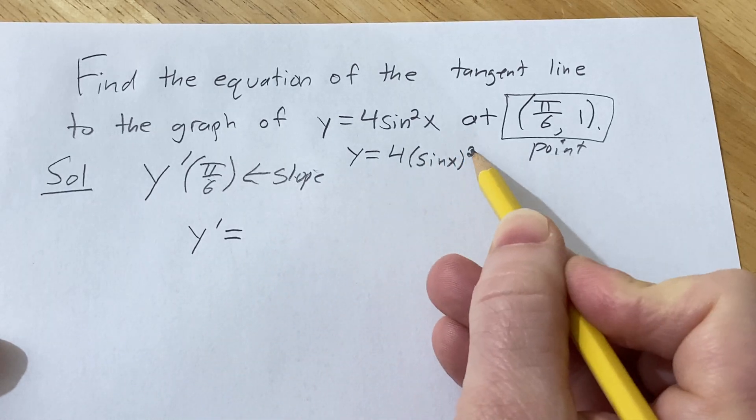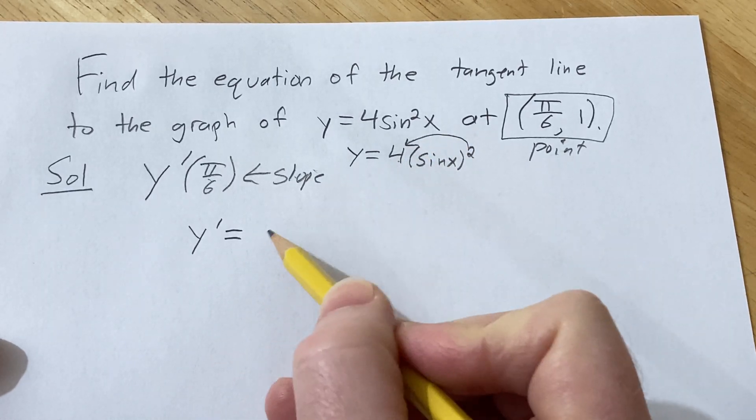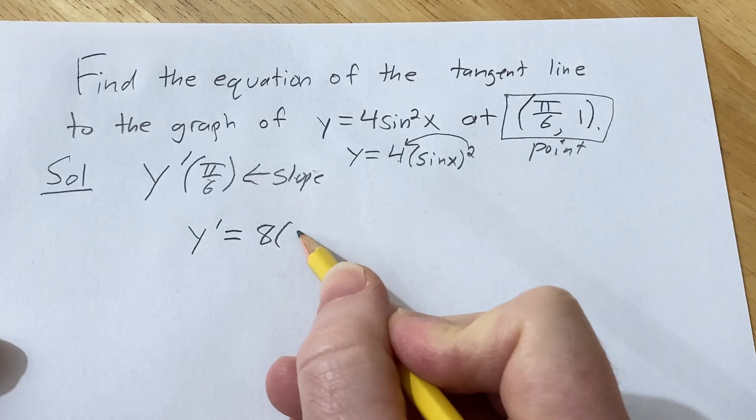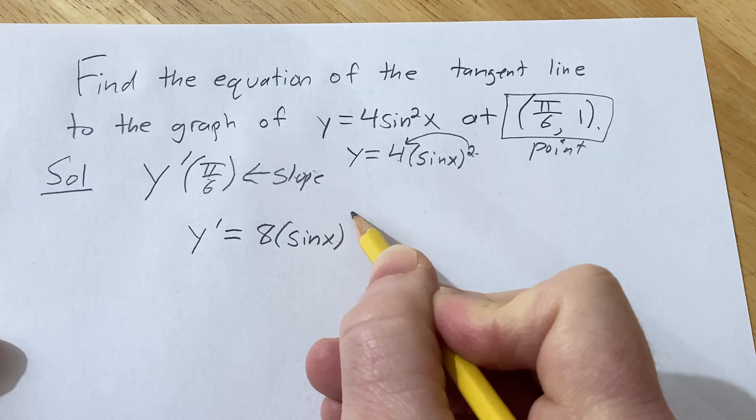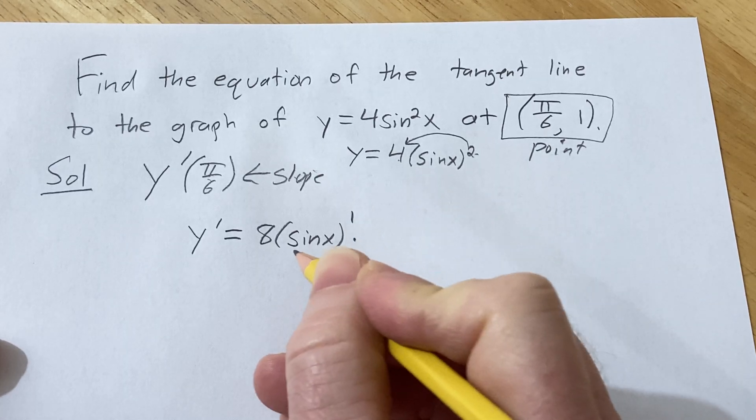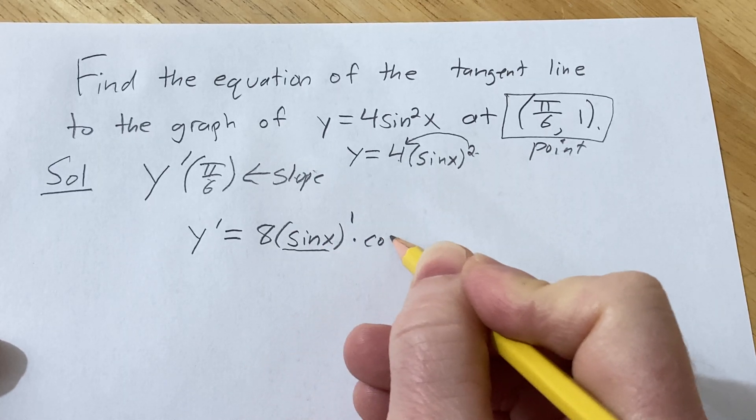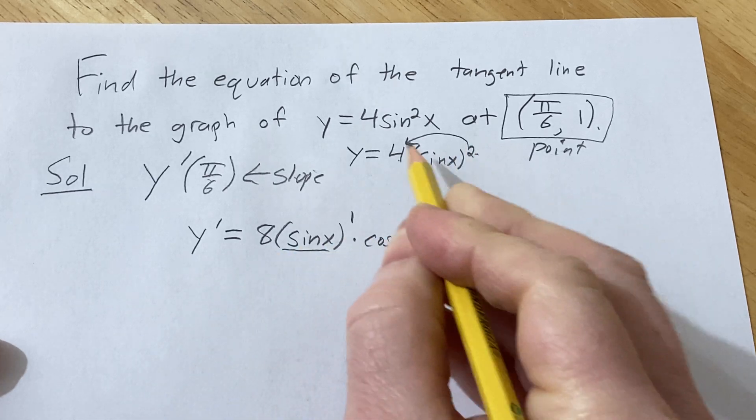So y' equals—bring down the 2, 2 times 4 is 8, leave the inside function untouched, subtract 1 from the exponent, times the derivative of the inside function, which is cosine. So this is the derivative of y.